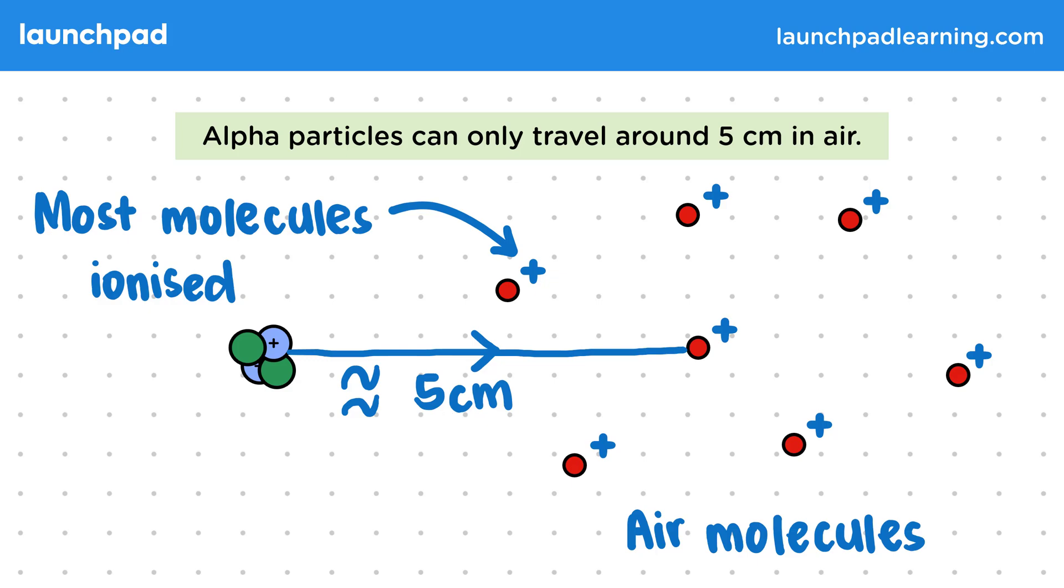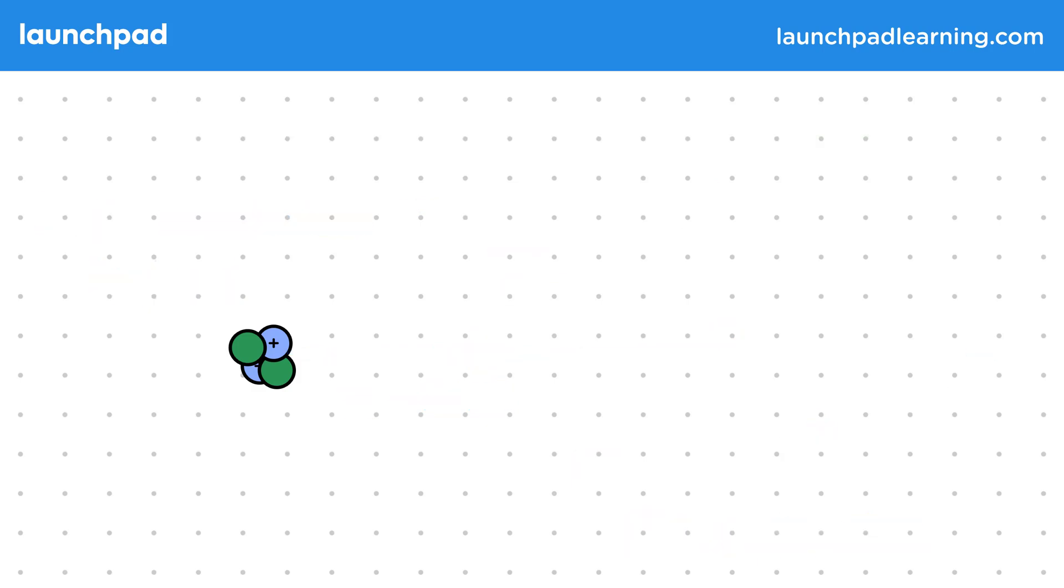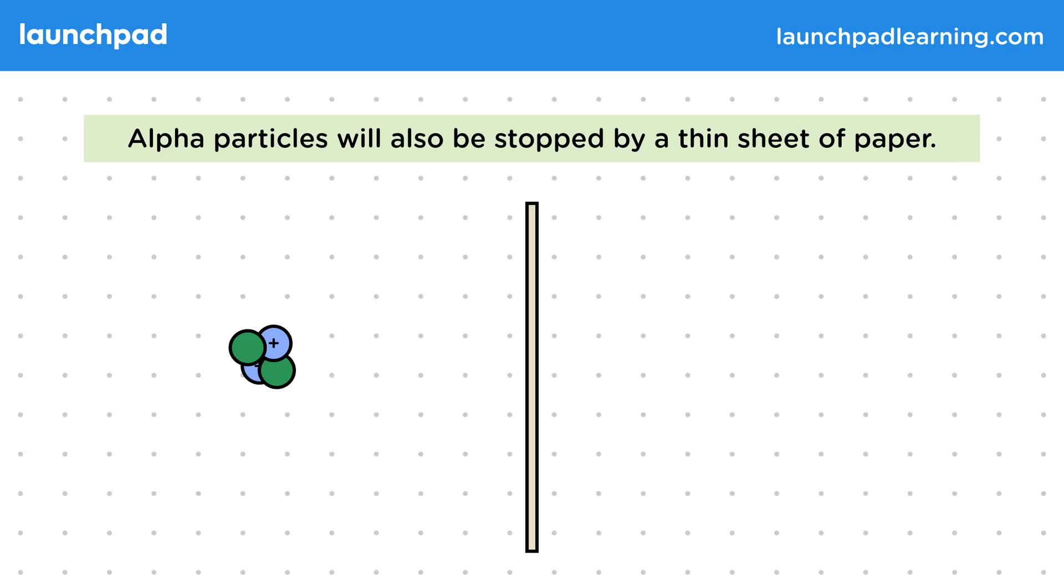But is there a way of reducing the range of the particle even further? Well, alpha particles will also be stopped by a thin sheet of paper, though most solids will also stop them. We just need enough molecules for the alpha particle to collide with. So even if we just have a sheet of paper less than 1 millimetre thick, this will be enough atoms for the alpha particle to be stopped by.